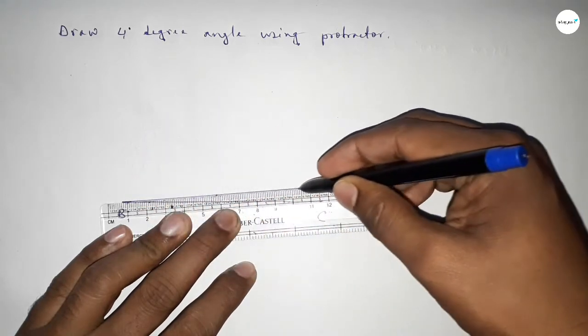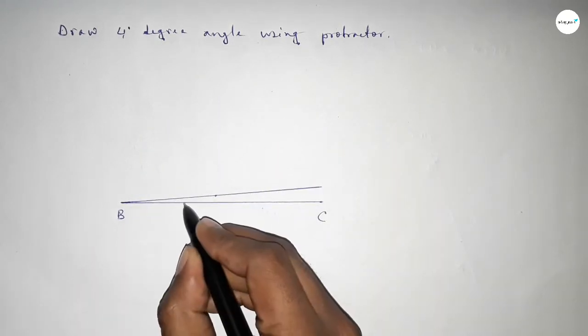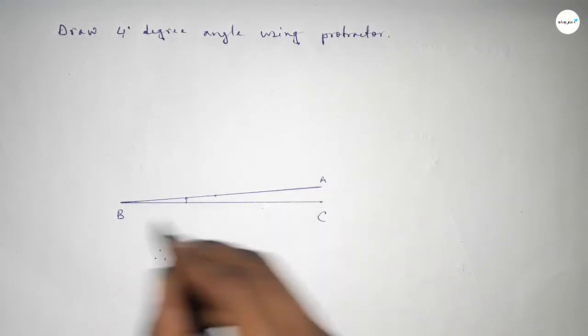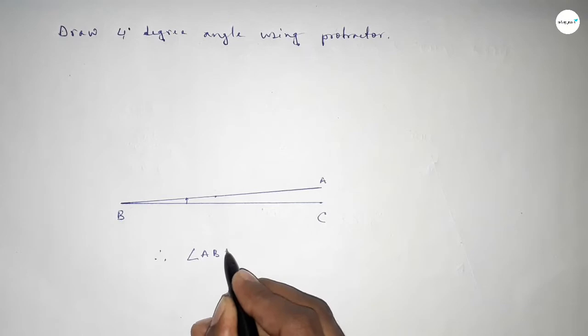Joining this one and taking here a point. So angle ABC, angle ABC equals 4 degrees.